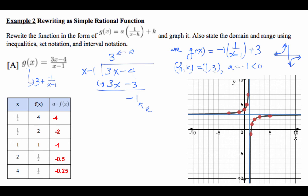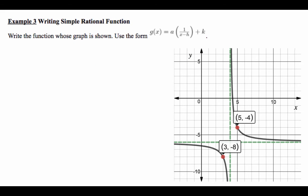Go ahead and write the domain and range for Example 2 — I'll check those tomorrow. Now for Example 3, we're given a graph and asked to write it as a function. The form we've been using is g(x) = a · (1/(x − h)) + k.